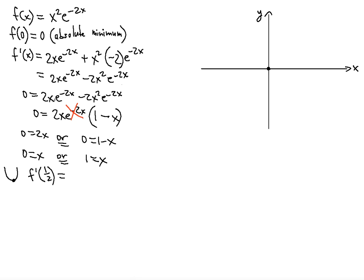We're going to use the derivative function. 2 times 1/2 is 1, and e to the negative 2 times 1/2 is e to the negative 1. Then 1/2 squared is 1/4, and 2 times 1/4 is 1/2, so that term is negative 1/2 · e^(−1). The e^(−1) is positive, so e^(−1) is greater than 0. That confirms the derivative is positive to the right of x = 0.